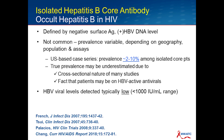If you look at the literature, the prevalence of occult hepatitis B in people with HIV is quite variable, and I think a lot of this depends on geography — what population you're looking at, what assays have been used. But if you look at US-based case series, the prevalence appears to be low, in the range of about 2% to 10% among isolated core patients. The true prevalence may be an underestimate due to the cross-sectional nature of many of these studies — they assess for this in one snapshot in time rather than longitudinally. And the fact is that many of our patients are on HBV-active antivirals, which will reduce our ability to detect occult hepatitis B.